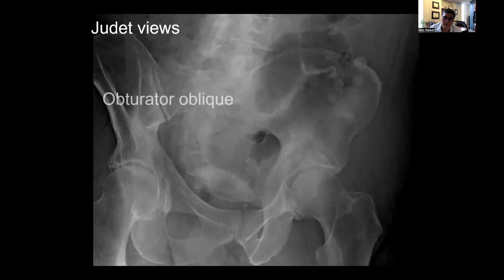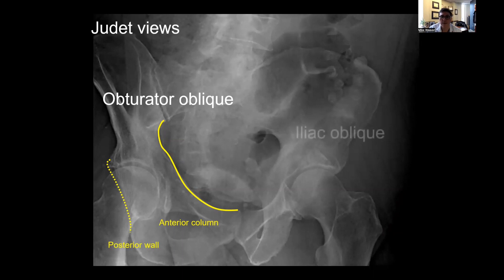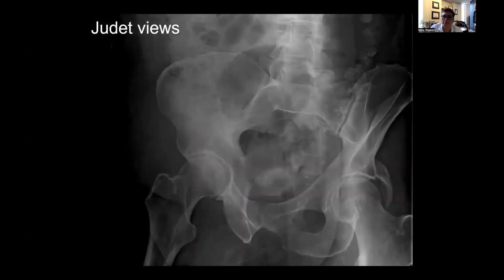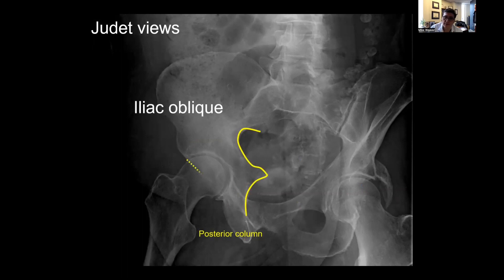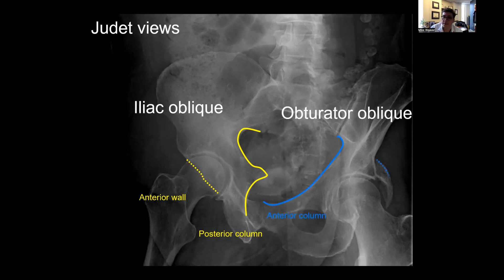En el oblicuo ilíaco de la cadera izquierda y el oblicuo obturador de la cadera derecha: en el lado derecho se ve la columna anterior y la pared posterior. La perspectiva del obturador muestra la columna anterior y la pared trasera. En la cadera izquierda con el oblicuo ilíaco aparece la columna posterior, que se extiende de la articulación sacroiliaca por la escotadura ciática mayor, pasando por la espina isquiática hasta el isquion, y luego la pared frontal. En ese lado no hay interrupciones visibles. Al examinar el lado izquierdo se identifica la columna anterior intacta y se detecta la fractura: es una fractura acetabular de la pared posterior desplazada.